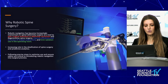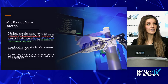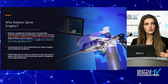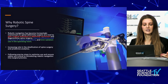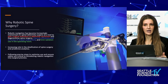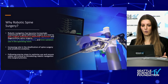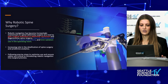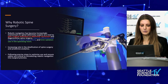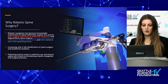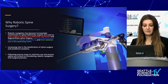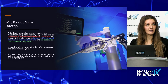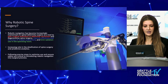Robotic navigation has become increasingly mainstream in spinal deformity surgery as a tool to plan surgical technique and deformity correction, and in degenerative spine surgery to improve efficiency and accuracy of implant placement and to limit radiation in the operating room. There's been an increasing role in the datification of spine surgery — the robot acts as a tool to collect data, analyze it, and perform good analysis for patient outcomes. Following precise steps to optimize usage and safety are critical to introducing robotic navigation into surgical practice.